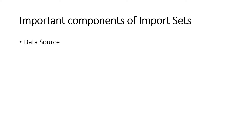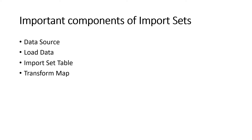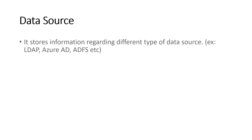The important components of import sets are: data source, load data, import set table, transform map, and transform. Data source is a table inside of ServiceNow that stores information about different types of data sources — like LDAP, Azure AD, and ADFS — including how to configure those and what things are required. I'll show you this; it will help when we configure Azure Active Directory or ADFS in the future.